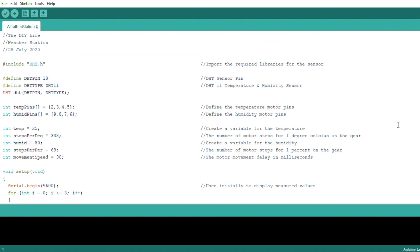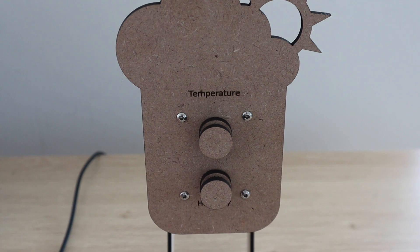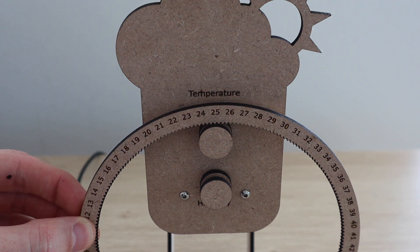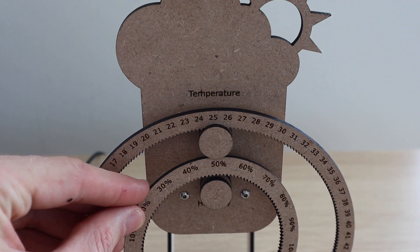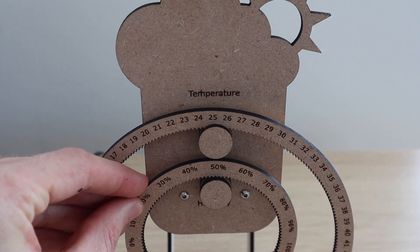That's the code, now let's see how it works. Before you upload the code, place the two gears onto the motors, setting them up to indicate the values set up initially in the code. These were 25 degrees and 50% humidity in my code.